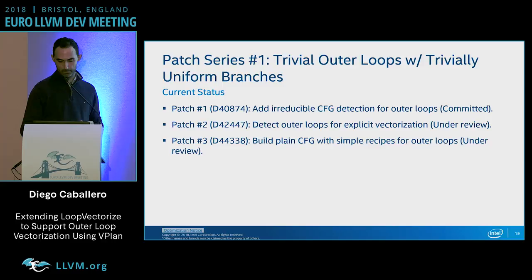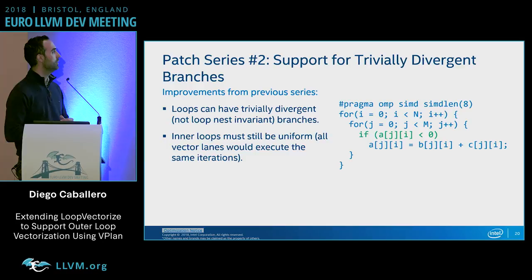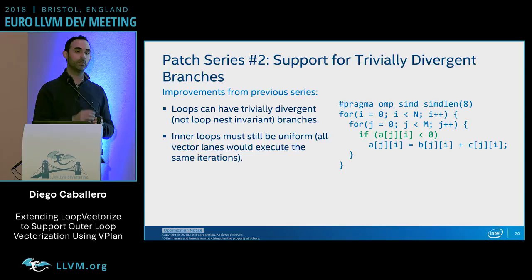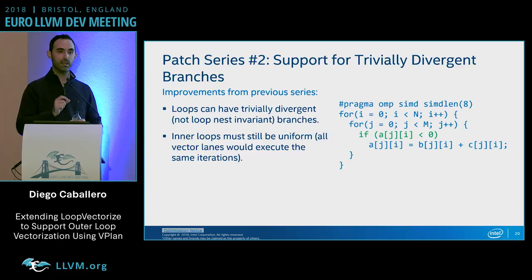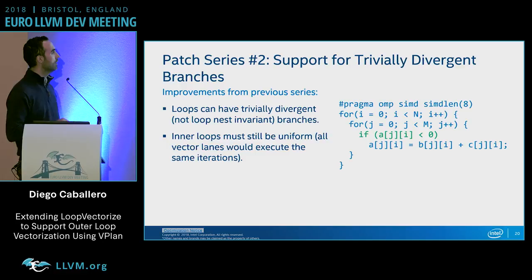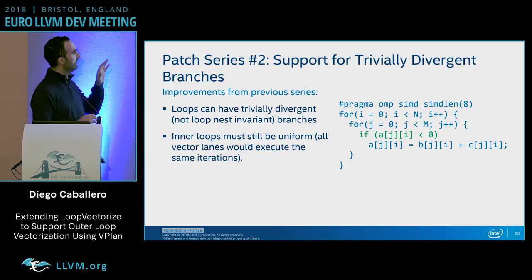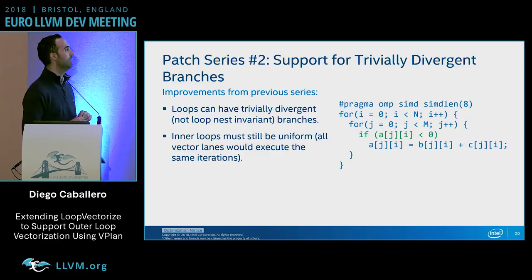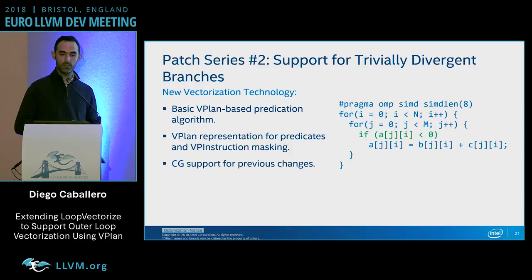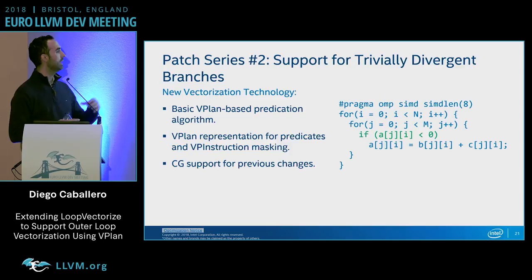In patch series two, we introduce support for trivially divergent branches — divergent is the opposite of uniform, meaning we cannot ensure all vector lanes take the same path. All branches that are not loop-nesting invariant will be considered divergent. This divergent support applies only to non-loop branches, so loops must still be uniform at this point. The technology introduced includes a basic vPlan predication algorithm, representation for predicates and masking, and code generation support.